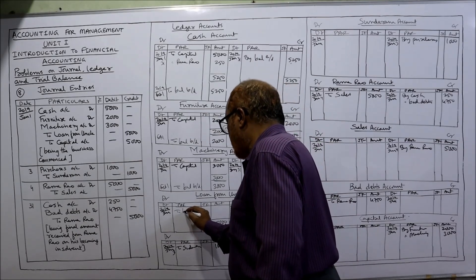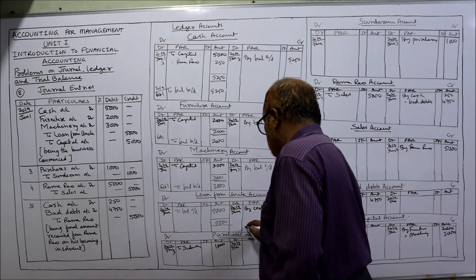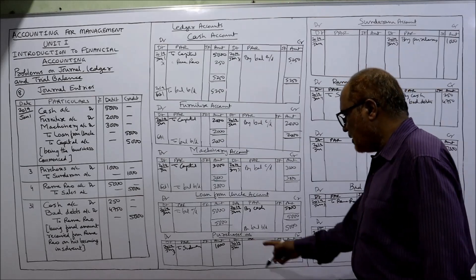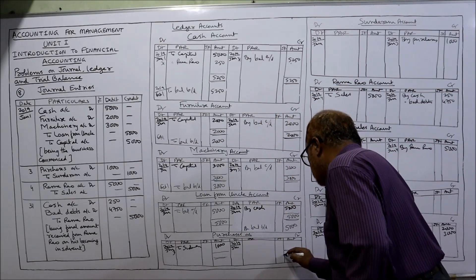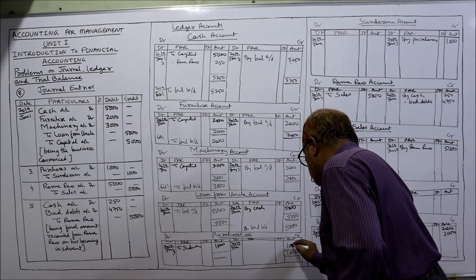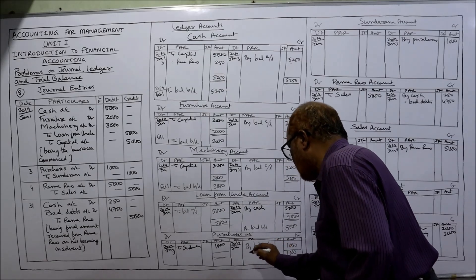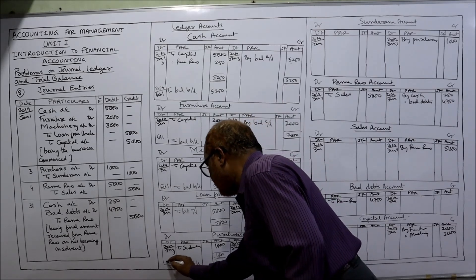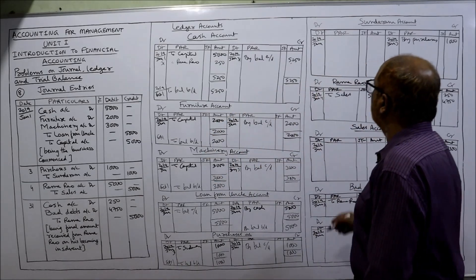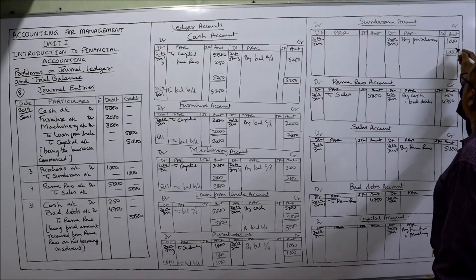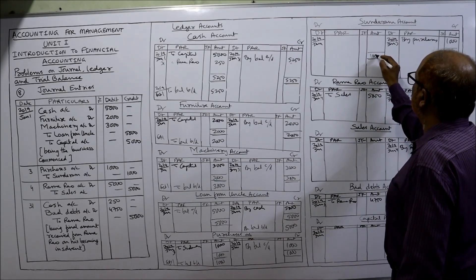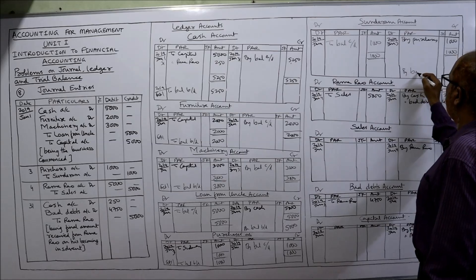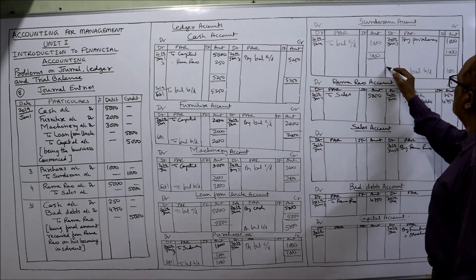Machinery account balance: 3000. Loan from uncle account: credit side only 5000 — balance carried down 5000, balance brought down 5000. Purchases account: debit side only 1000 — balance carried down 1000, balance brought down 1000, February 1st. Sundaram account: credit side only 1000 — balance carried down 1000, balance brought down 1000, February 1st.